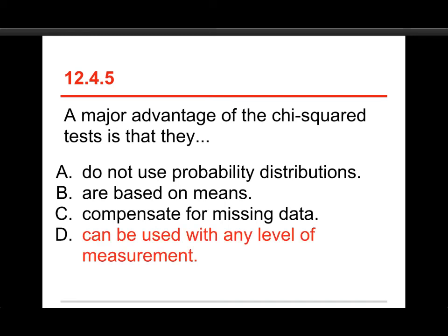The answer here is they can be used with any level of measurement. A, they do use probability distributions, they use the chi-squared distributions. They're not based on means, so B is not true. They don't compensate for missing data, it's D.